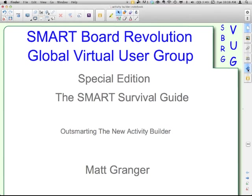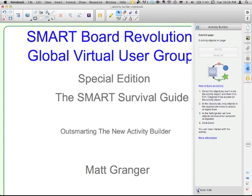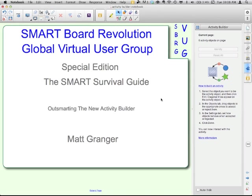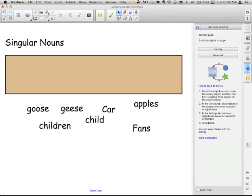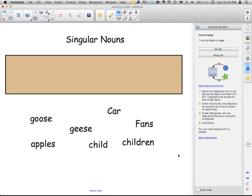I'm going to go to the Activity Builder tab and turn off my Auto Hide so that tab won't disappear as I work. Maybe we're just introducing singular nouns. We don't want the singular and plural. We don't want to sort into two different boxes, we just want one. So maybe this lesson comes before the lesson about plural nouns. We just want to be able to identify the singular nouns at first.